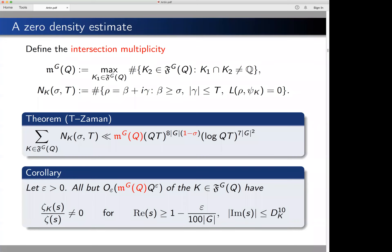This is telling us that as long as you can control the intersection multiplicity — as long as it's a relatively small power of Q — and you have some polynomial lower bound on the size of the family, then almost all of these ratios, in a density sense, have a very strong zero-free region commensurate with the Riemann hypothesis up to the quality of that power. The work with Asif reduces understanding zeros of Dedekind zetas on average, and Artin L-constituents on average, to the purely arithmetic problem of estimating this multiplicity.